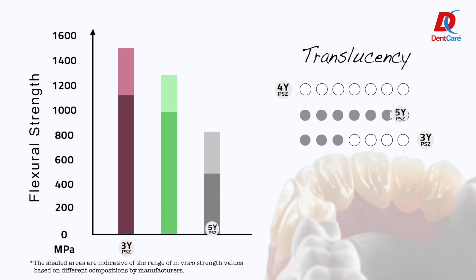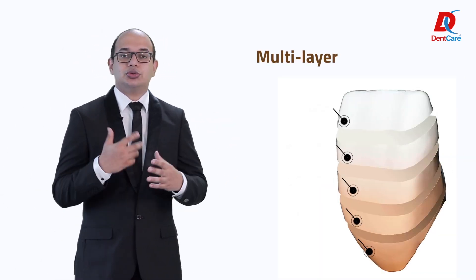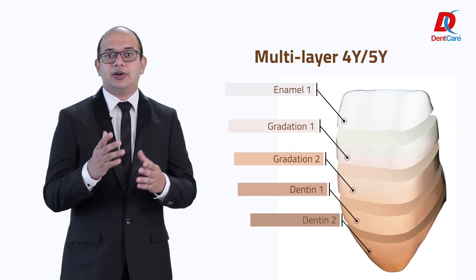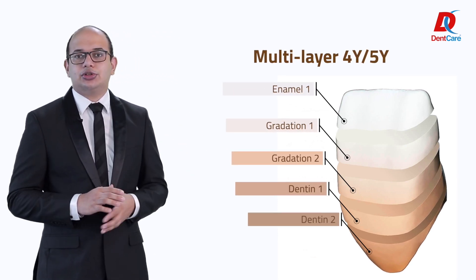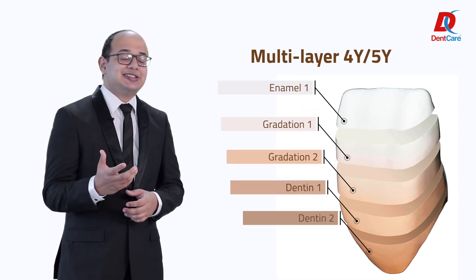The 5Y zirconia, on the other hand, is very translucent and highly aesthetic, but it can never match the strength of a 3Y. A 4Y is the perfect blend of strength and translucency. Apart from 3Y, 4Y, and 5Y, we can also have different blends such as 4Y and 5Y in a multi-layered zirconia disc with shade gradation to mimic the aesthetics of natural teeth.